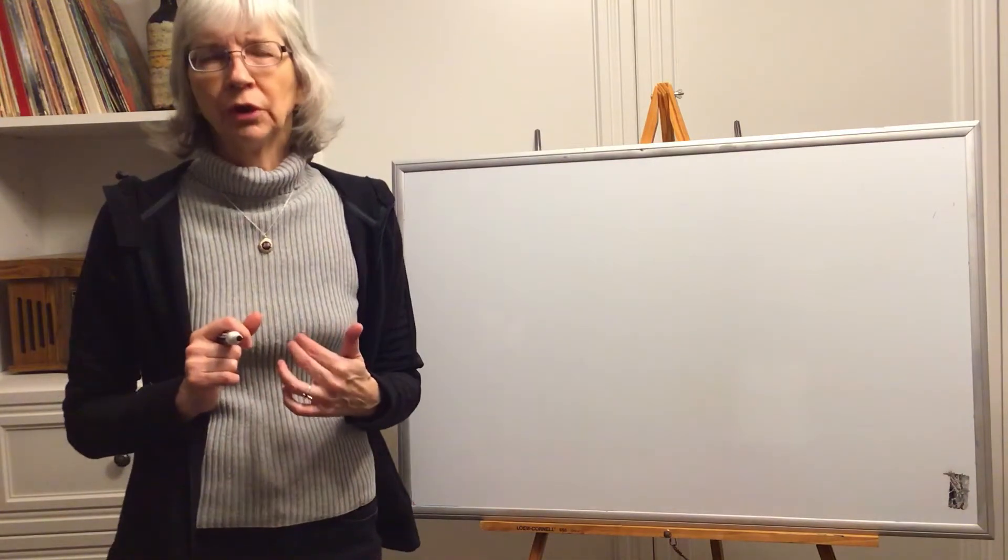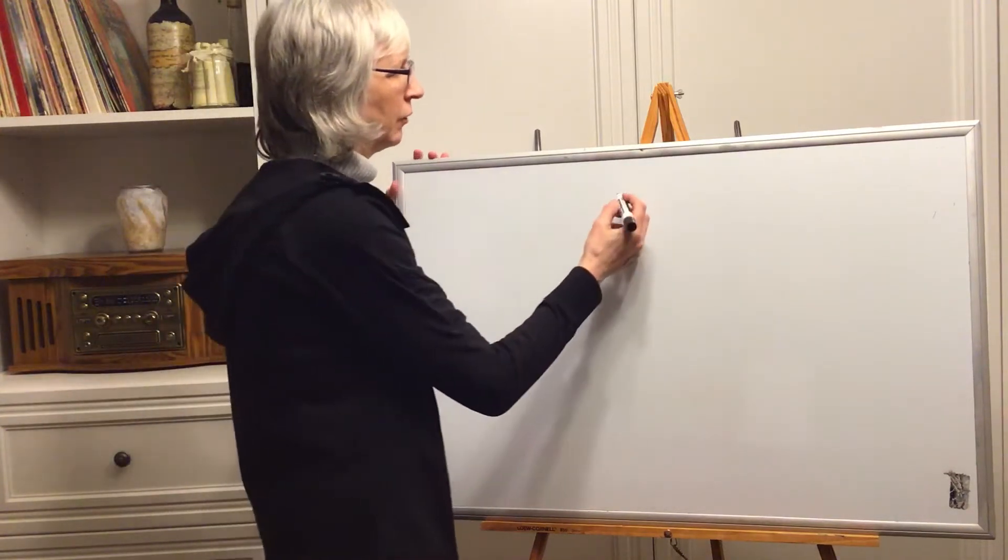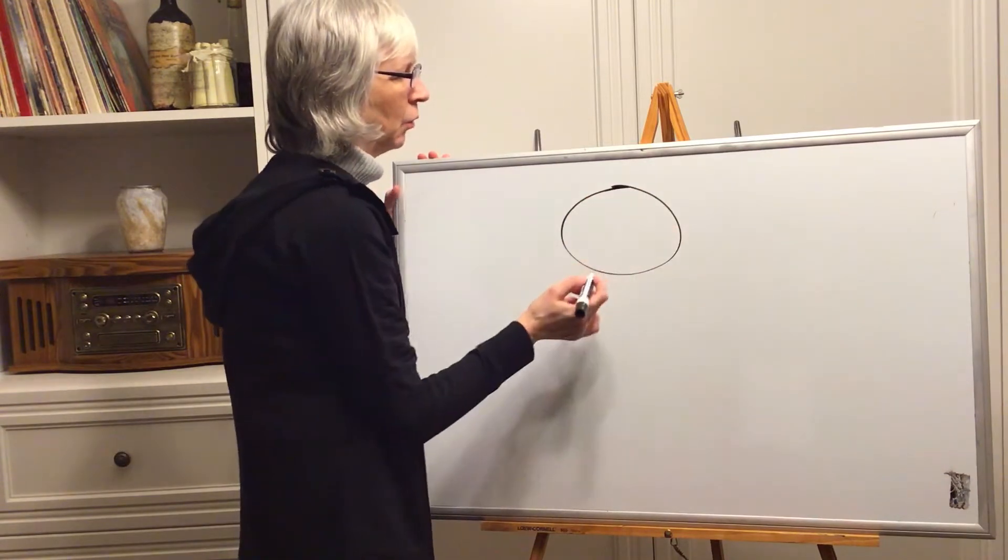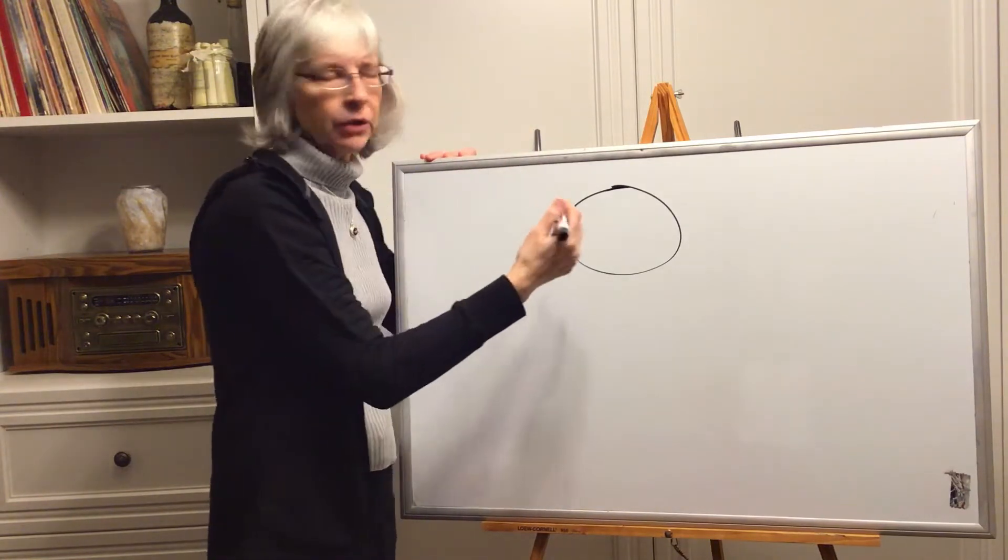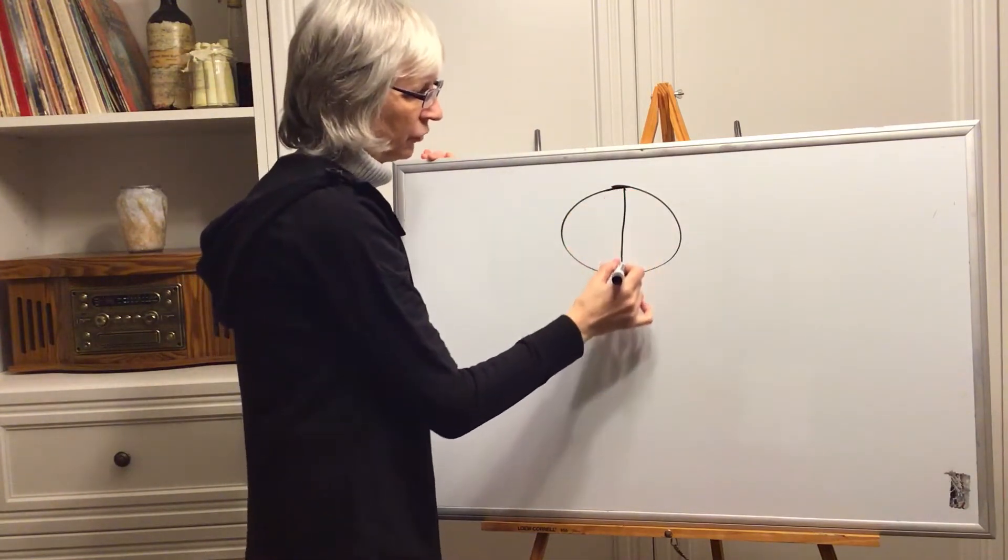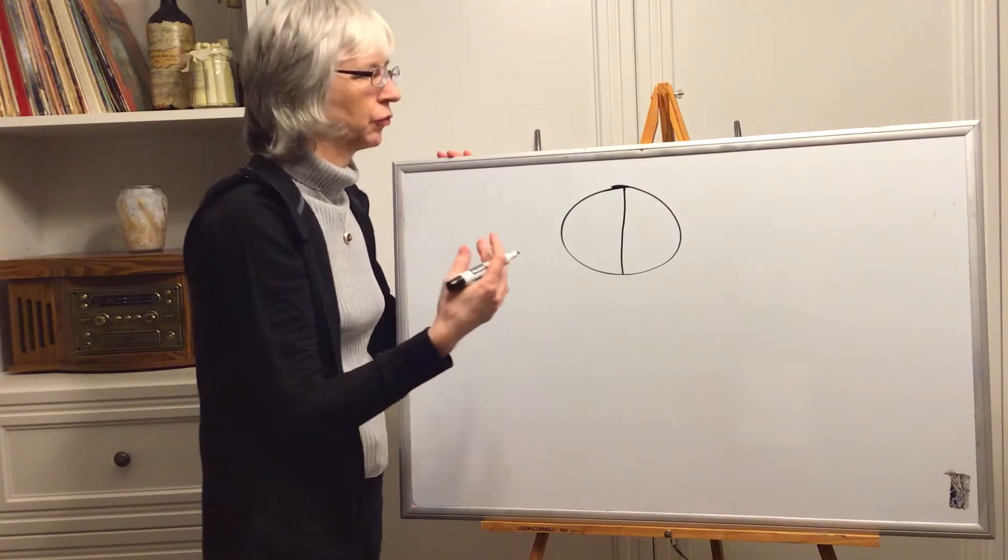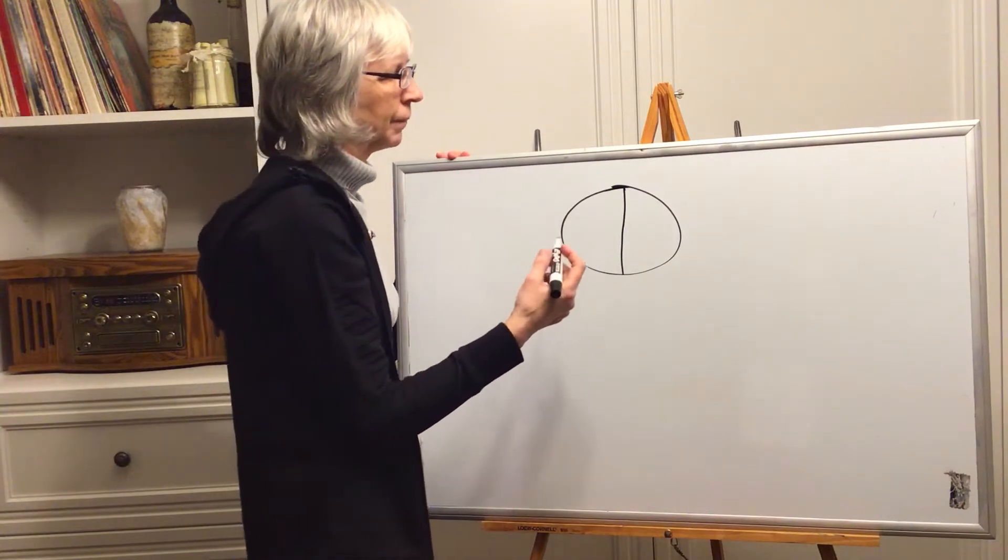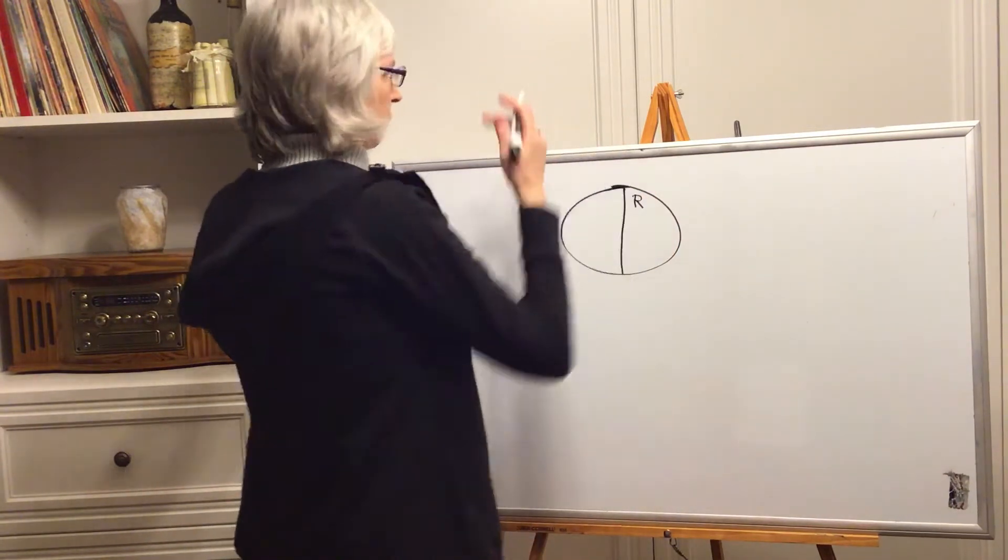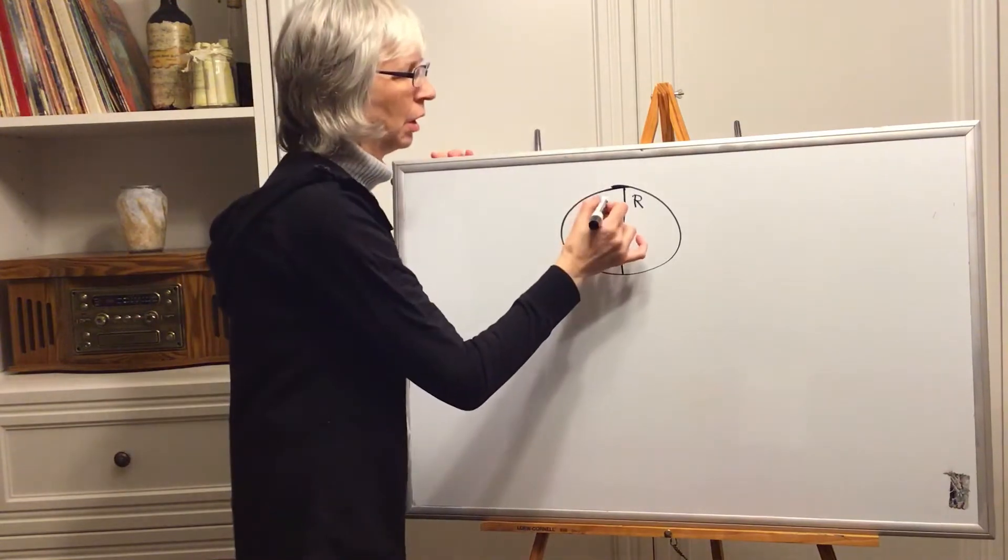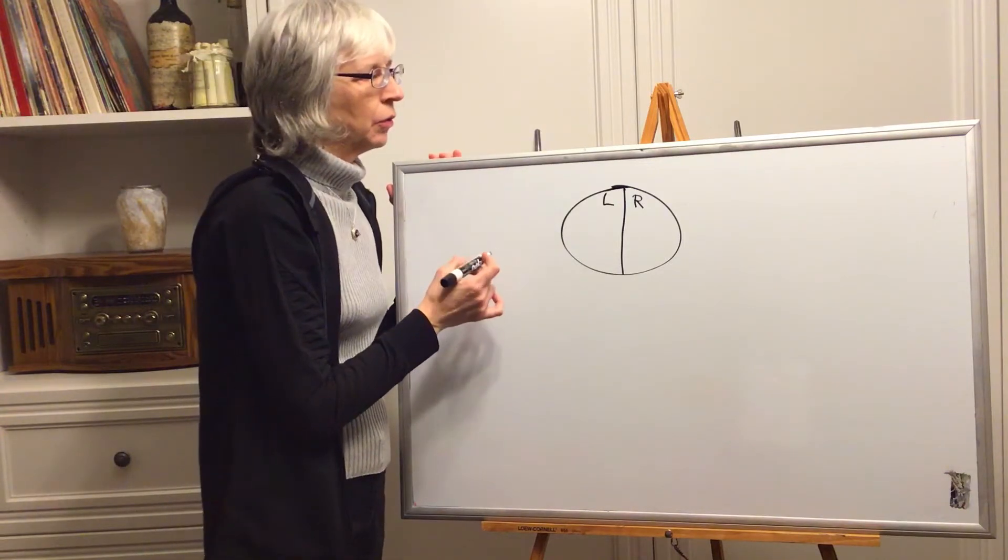We have the cerebrum, which is at the top of the head right into the skull, and it's divided into two parts, two hemispheres. We hear someone talk about right and left hemisphere. That's what they're talking about. So the right hemisphere, and I'm doing this, you're looking the same way you're looking here, the right hemisphere and the left hemisphere.